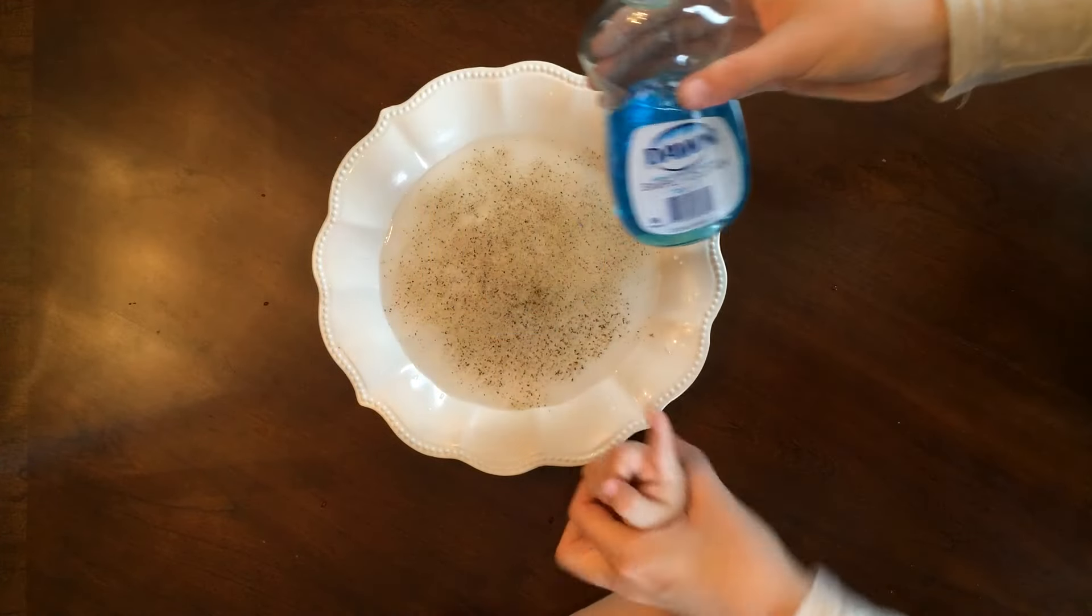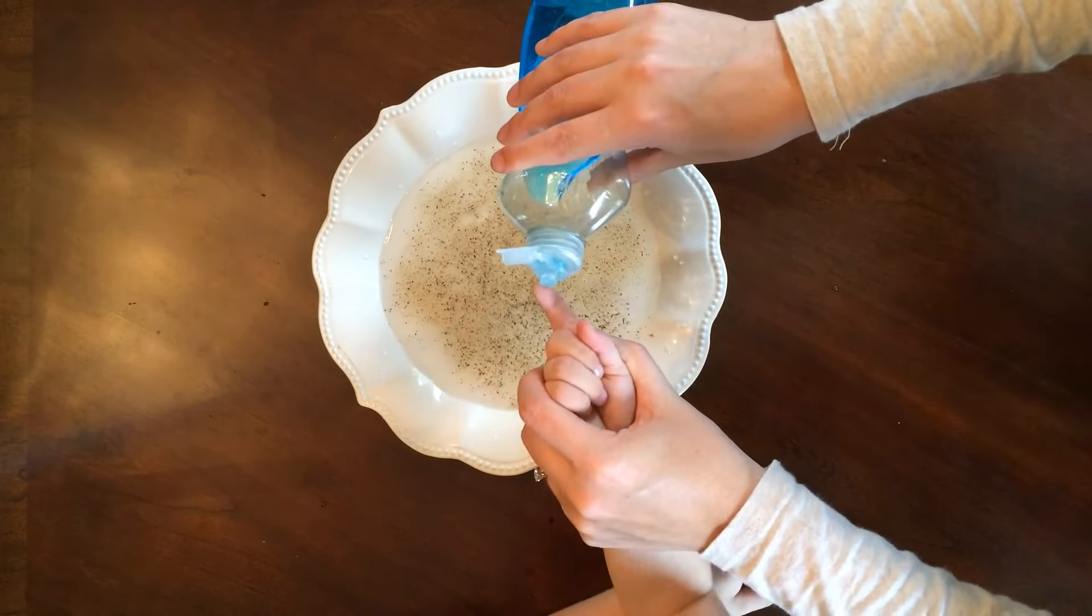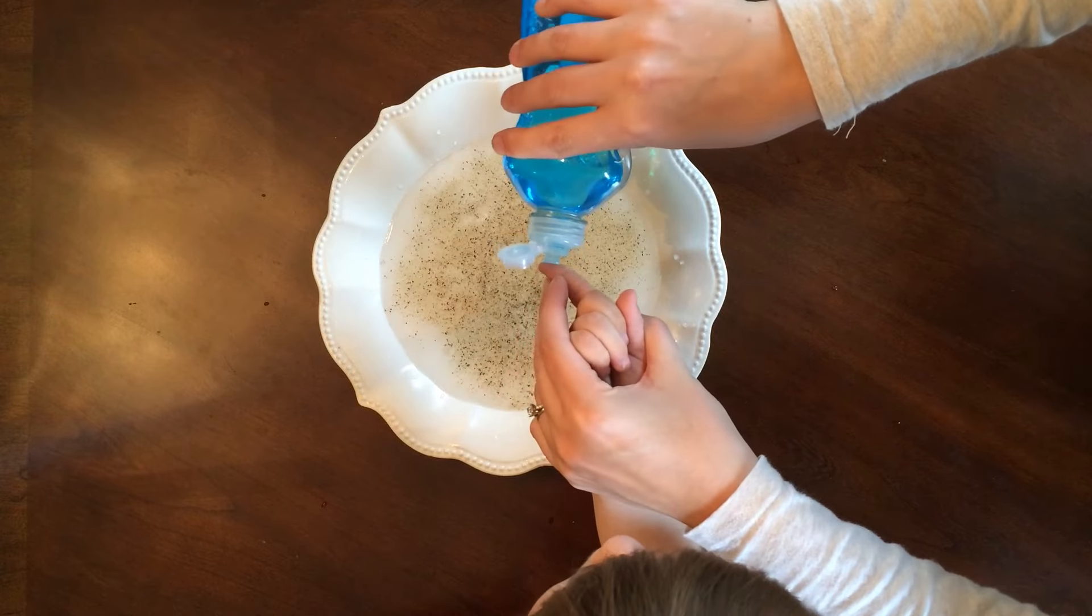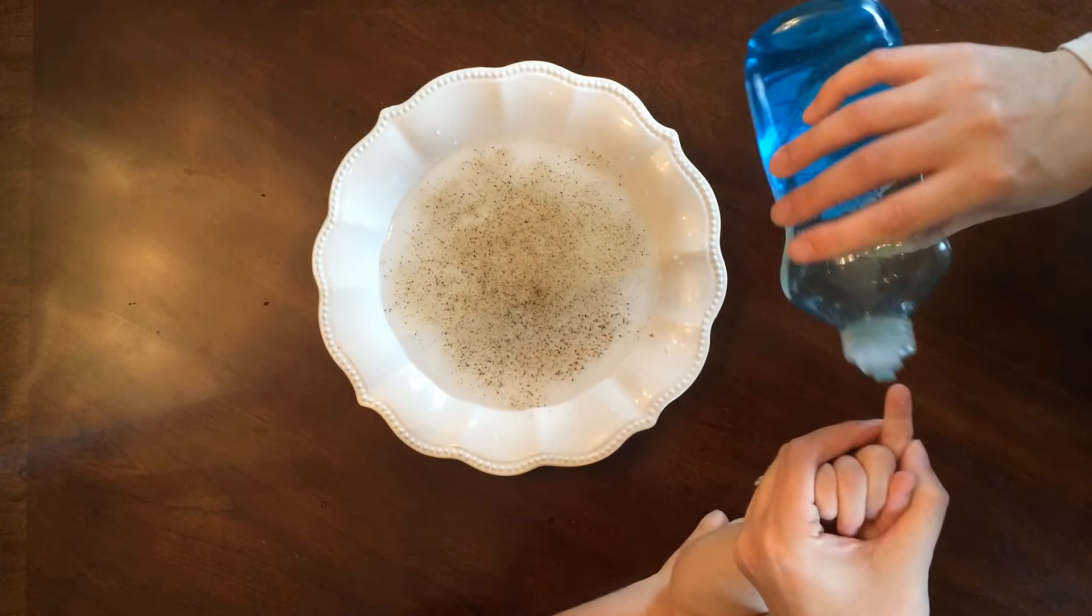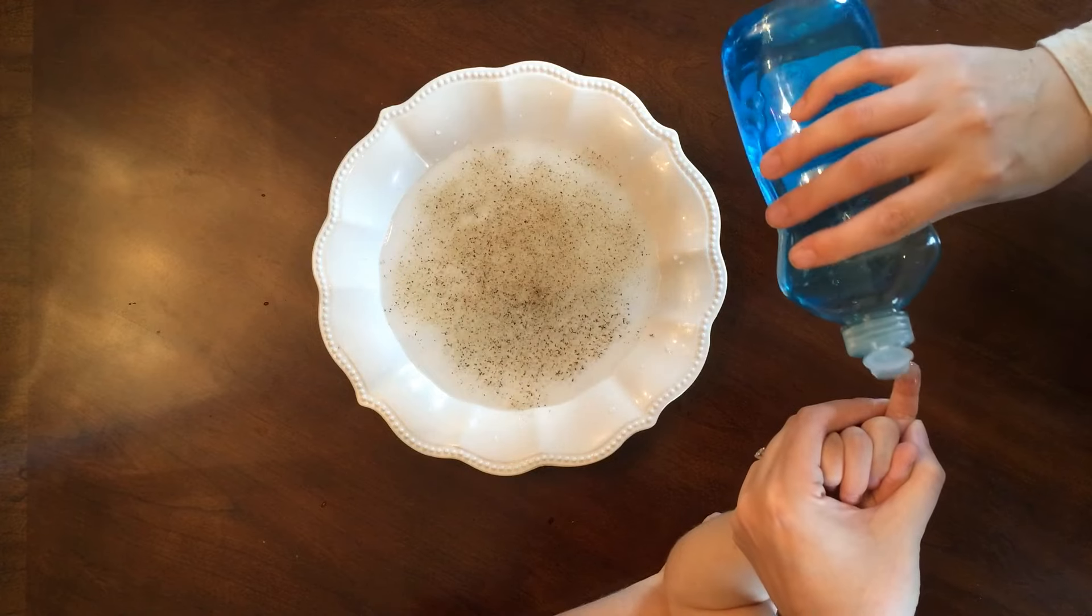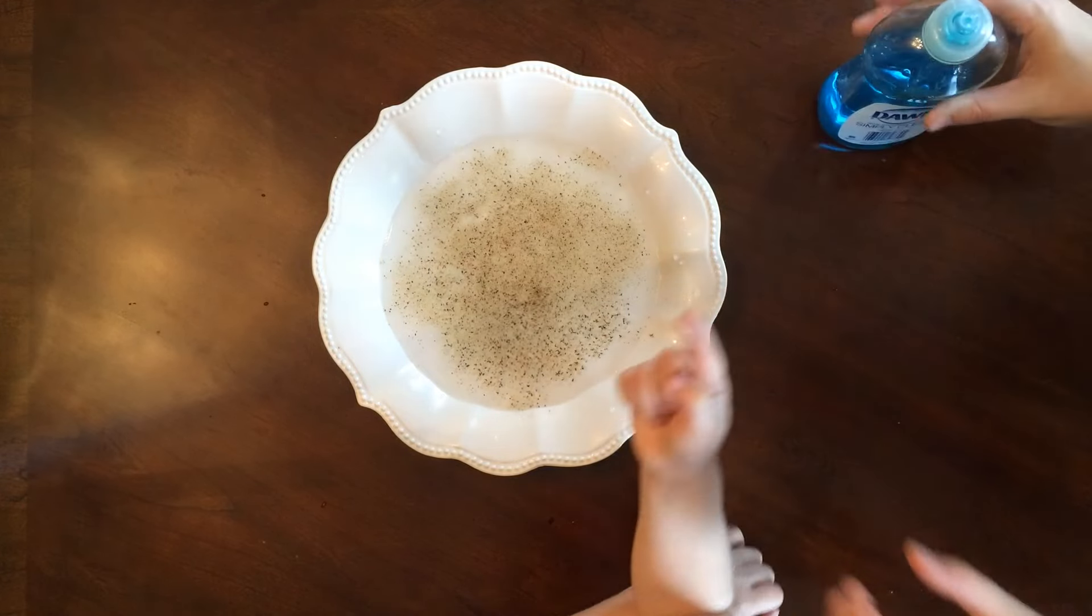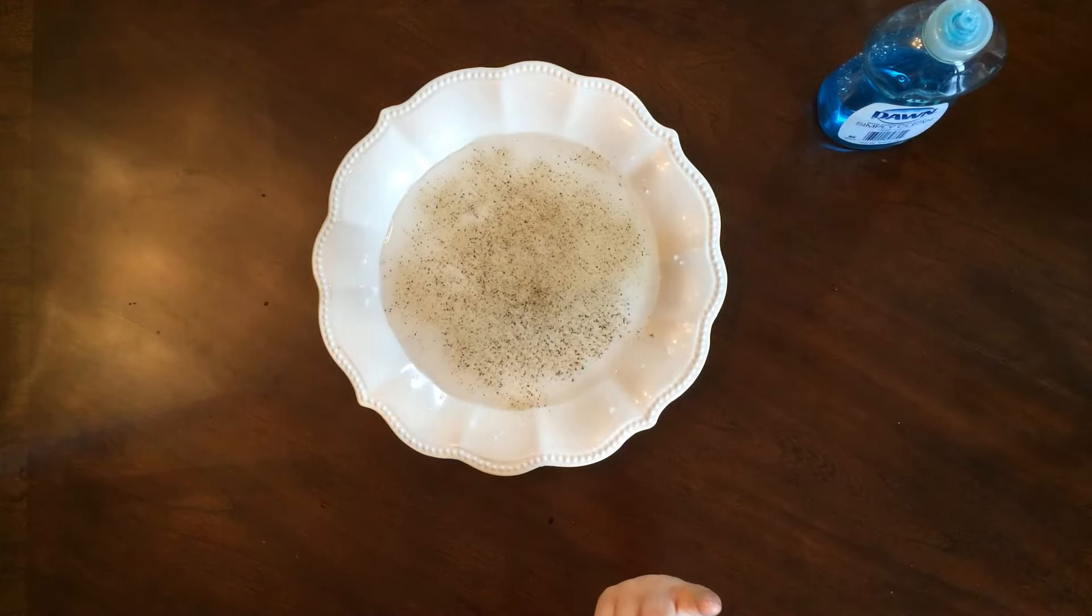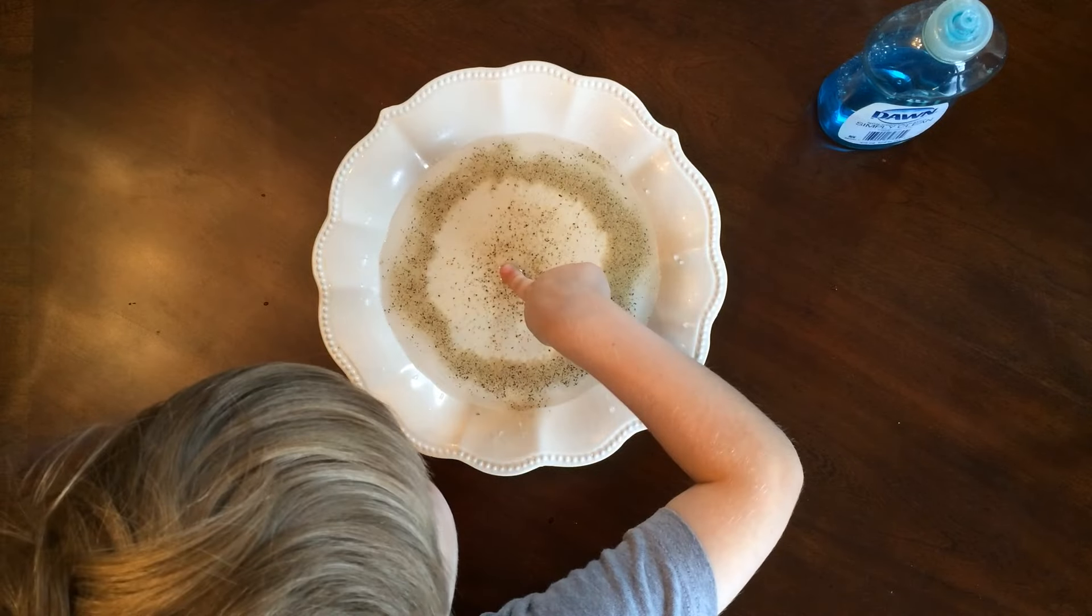And then here's where the secret comes in. Put a little bit of dish soap on your finger. And then as soon as you touch it, you're lowering the surface tension of the water by adding the soap. Pretty cool science. Whoa!